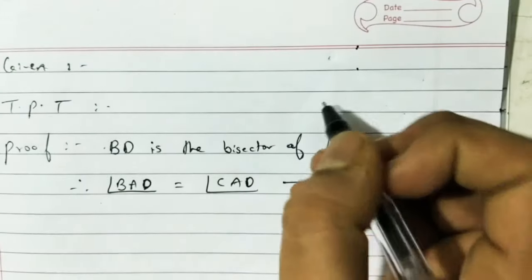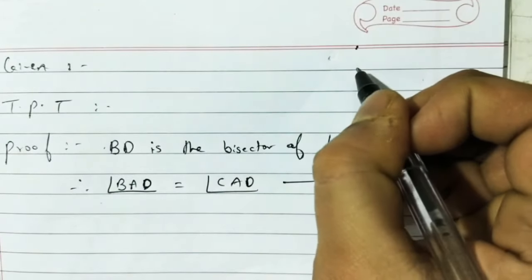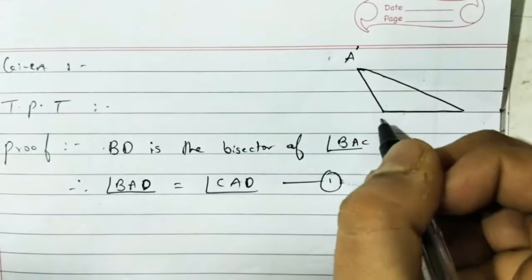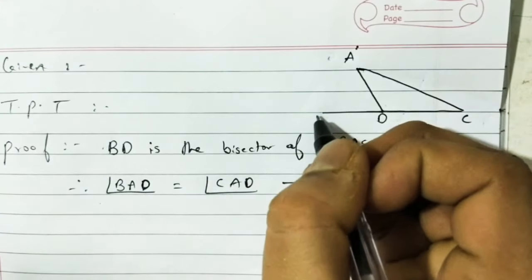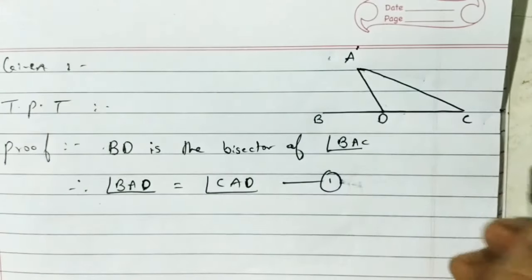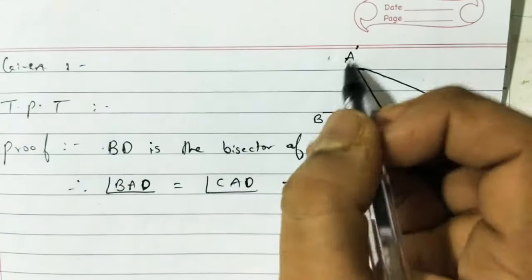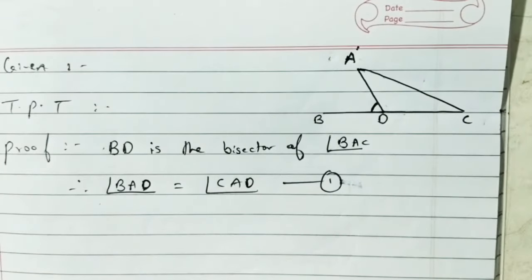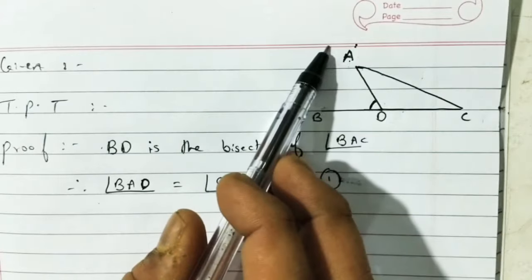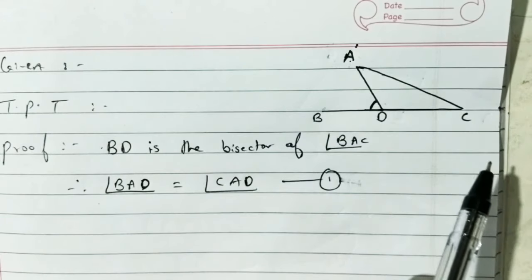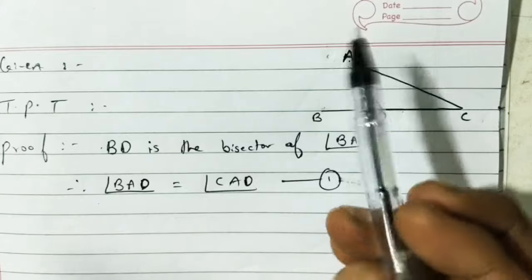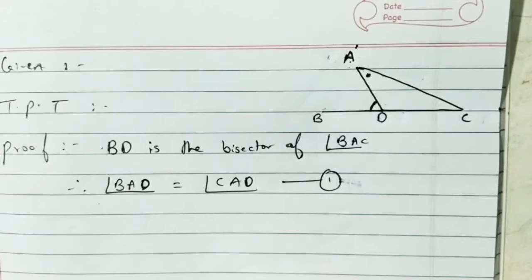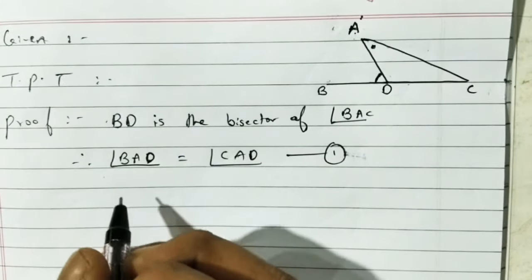For the next part, see: triangle ADC — here B is this point. I haven't joined AB yet. In triangle ADC, angle ADB is the exterior angle of triangle ADC. An exterior angle is always greater than the remote interior angles.